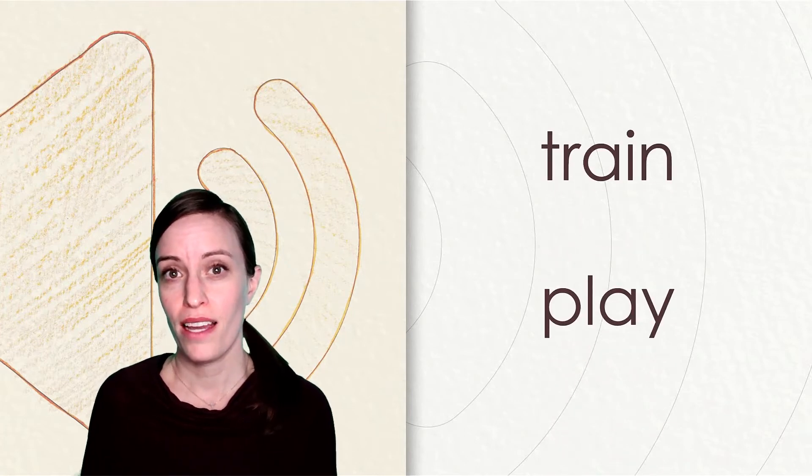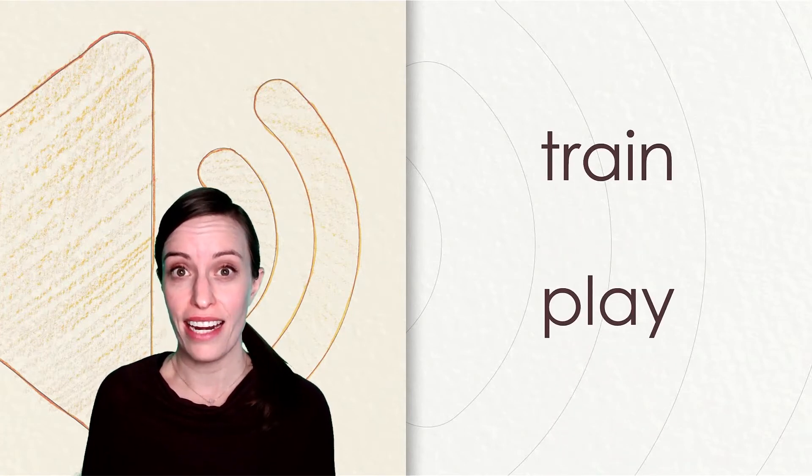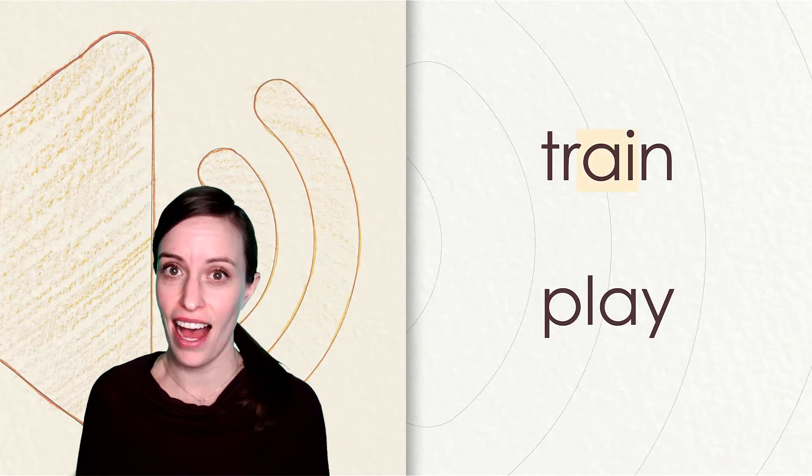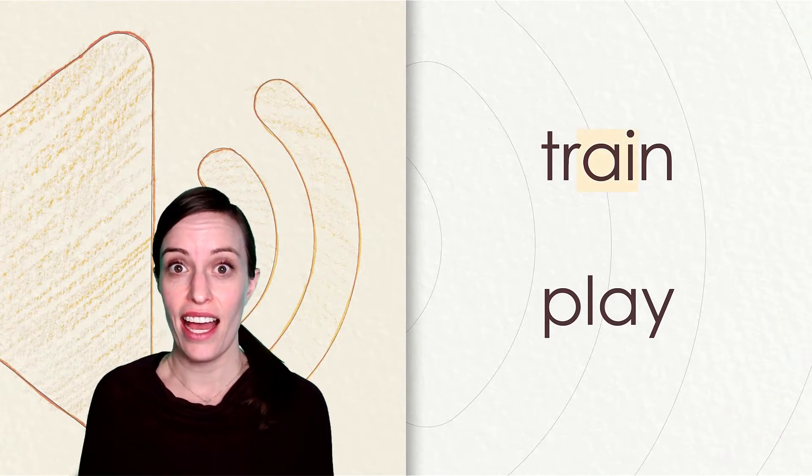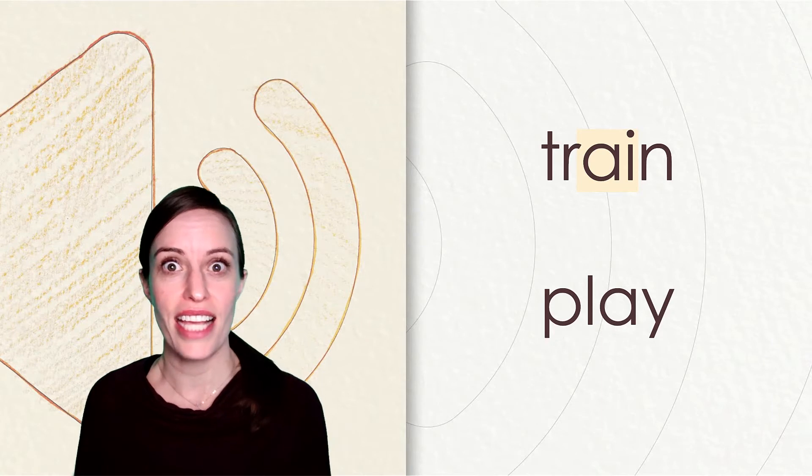Listen closely to these first two words: train and play. Train and play. What vowel sound do you hear in train and play? Did you say the long a? That's correct! Let's look more closely at how these words are spelled. In the word train, we have the vowel team ai. The a and the i work together to say a.